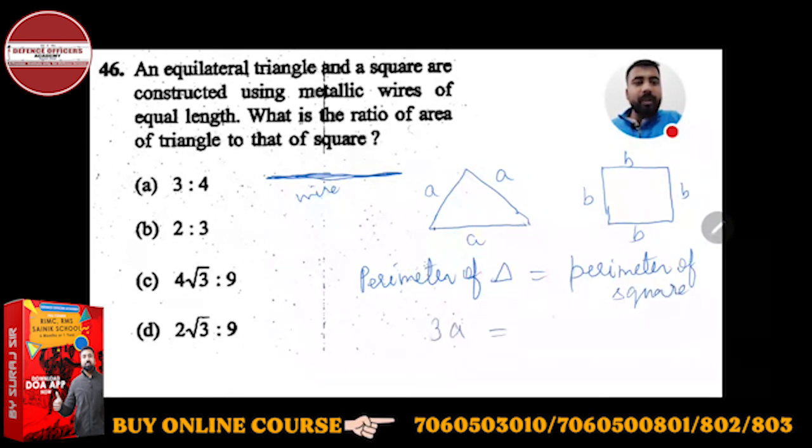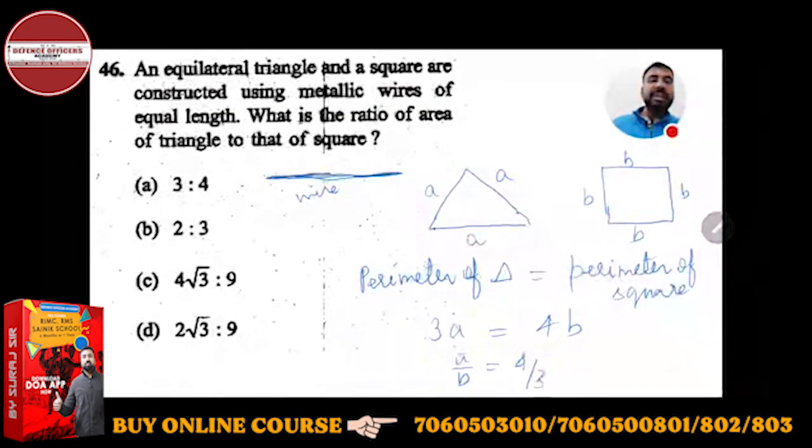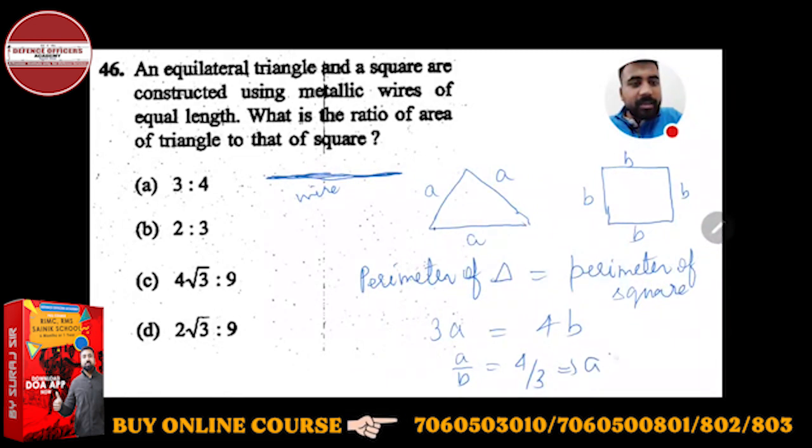What is perimeter of triangle? Sum of all the sides: 3a is equal to what will be the perimeter of square, 4b. From here, a upon b is equal to 4 upon 3. This means a is to b is equal to 4 is to 3.